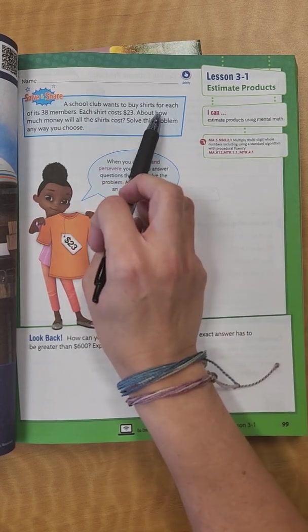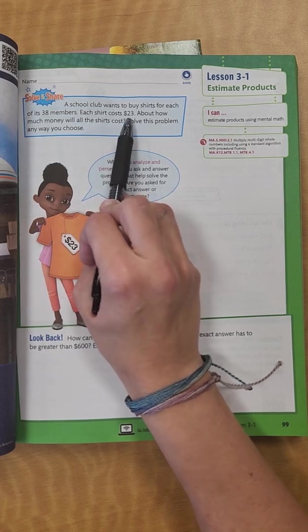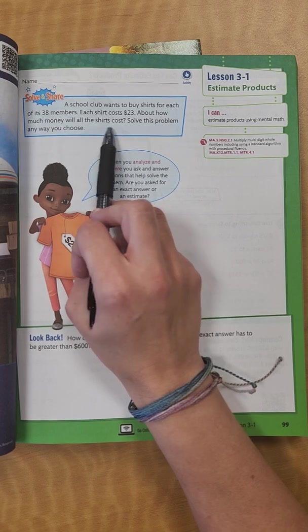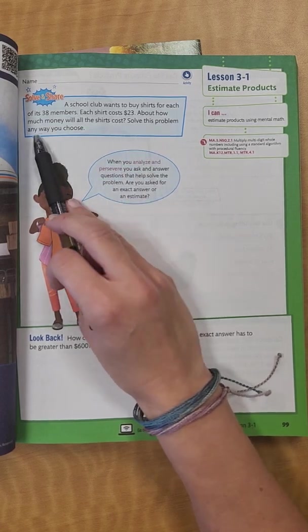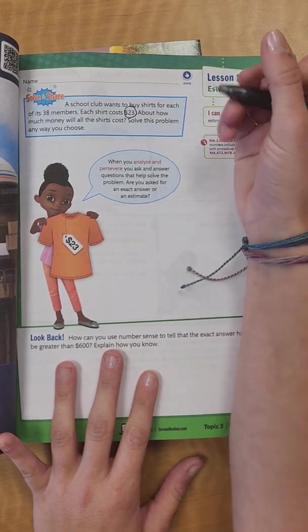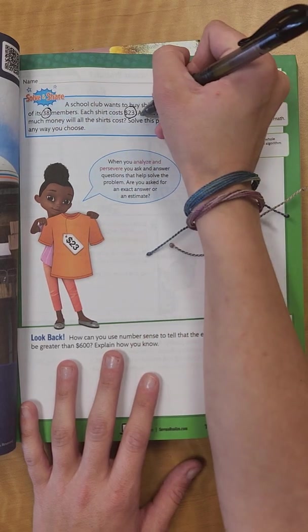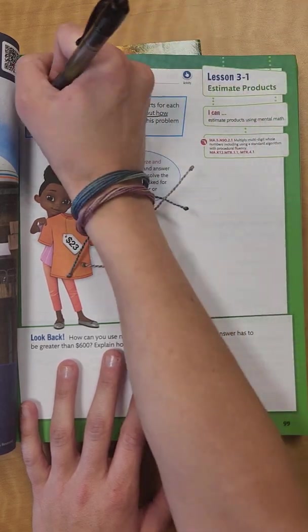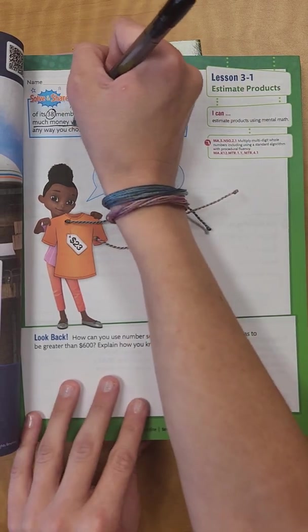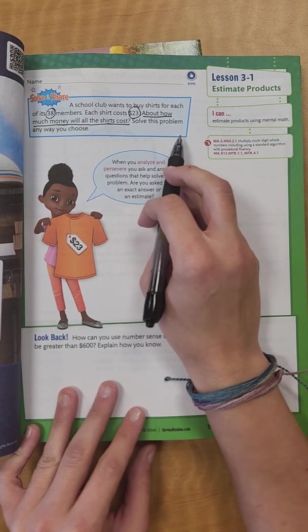It says a school club wants to buy shirts for its 38 members. Each shirt costs $23. About how much money will all the shirts cost? Solve this problem any way you choose. So we have $23, that's how much each shirt costs, and there's 38 members. Our question says, about how much money will the shirts cost?